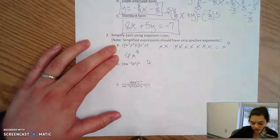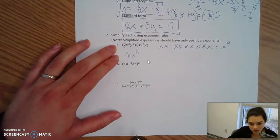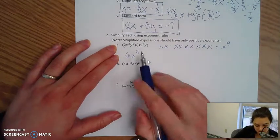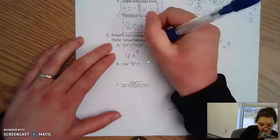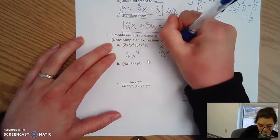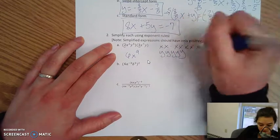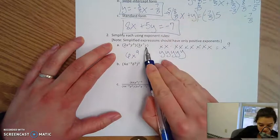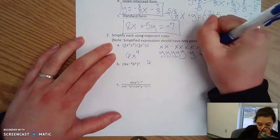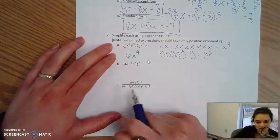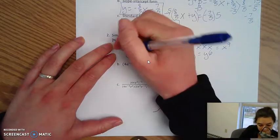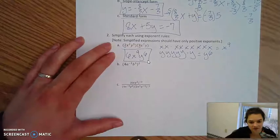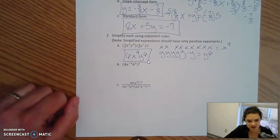That's why you add your exponents when multiplying them together. It's the same idea with your y's — you're doing y to the fifth times y, which is 5 y's times one more y, giving you y to the sixth. So putting everything together, your answer should be 6x to the ninth y to the sixth.